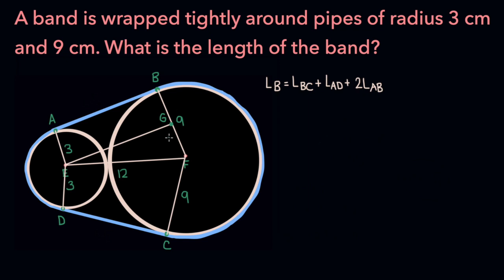And because of this, when the radii of the two circles touch that line segment AB, they're going to form 90 degree angles. And this makes the quadrilateral ABGE a rectangle.